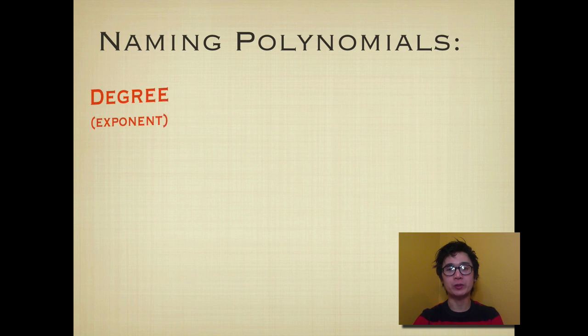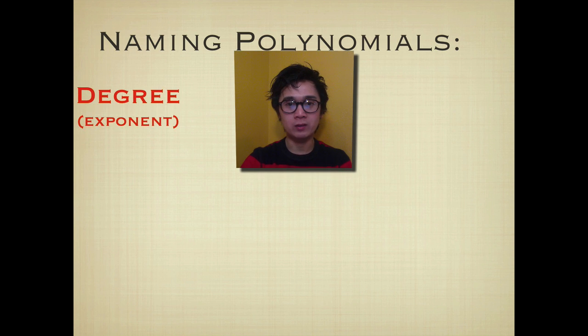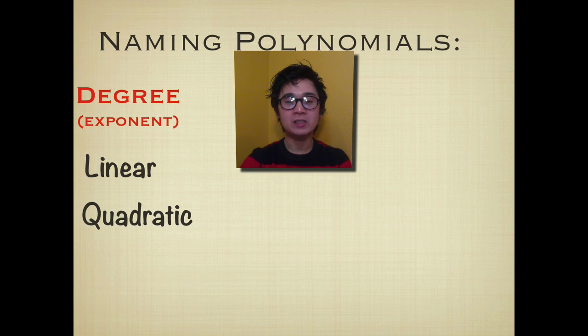We can name a polynomial according to its degree. For example, if we have a polynomial with the highest exponent of 1, we call it linear. And if it has the highest exponent of 2, we call it quadratic. And with the highest exponent of 3, we call it cubic.